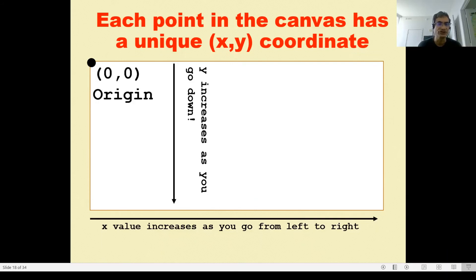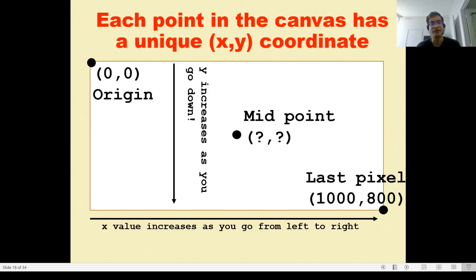By convention, the origin is actually our top left corner, as you're seeing there. So that is 0,0. As you keep increasing, the last pixel, which has the highest coordinate if you will, is in our case 1000 comma 800, which happens to be my bottom right corner. So I marked it there.